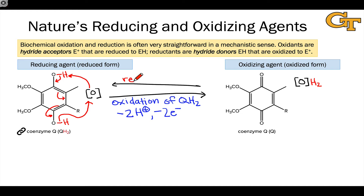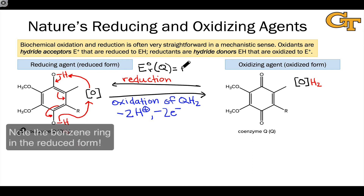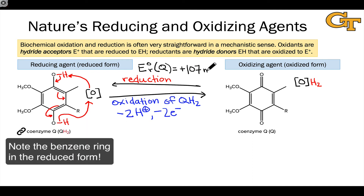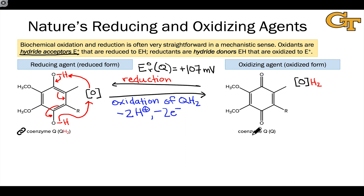The reverse process is reduction of coenzyme Q: the addition of hydride and a proton to the two carbonyl oxygens in Q. This pair differs from the previous two in that the reduction potential of Q is now positive — positive 107 millivolts. Relative to the 2H+/H2 redox pair, the reduction of Q to QH2 is favorable. This makes coenzyme Q a very important hydride acceptor and a key oxidizing agent within oxidative phosphorylation, also known as the electron transport chain.